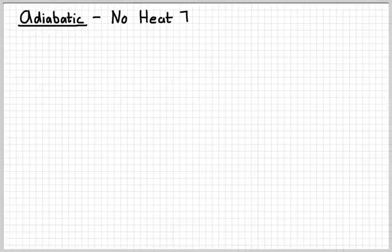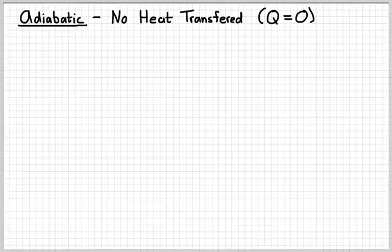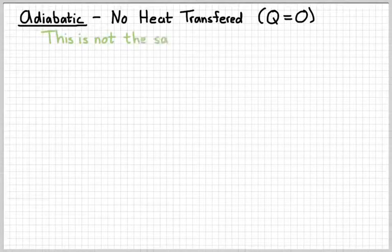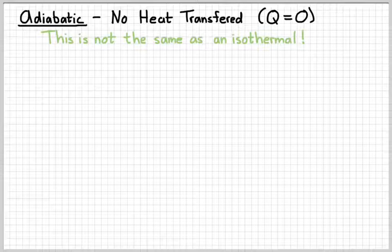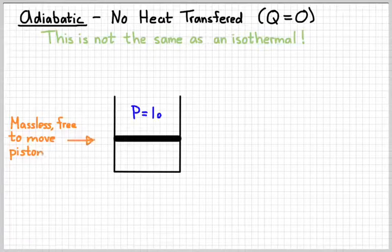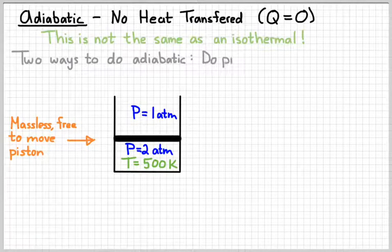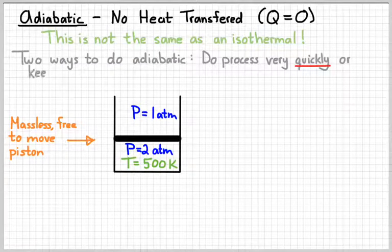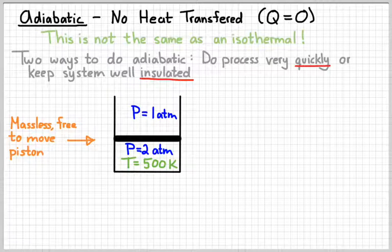The last process is called adiabatic. That means that there's no heat transferred between the system and the surroundings. In other words, Q is equal to zero. Now don't be confused. This is not the same as an isothermal. So you can add heat without changing temperature, and you can change temperature without adding heat. They're different processes. So we're going to start off with the same piston that we had earlier. And there's two ways that we could do an adiabatic process. We could either do the process very quickly, where there's no time for energy to be exchanged between the system and the surroundings. Or we can keep the system well insulated.